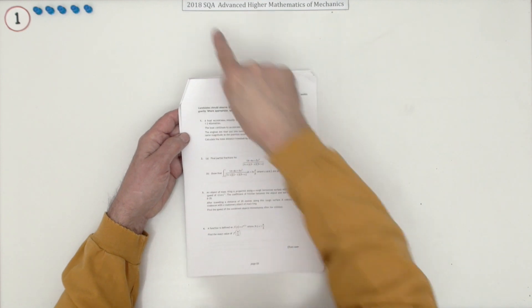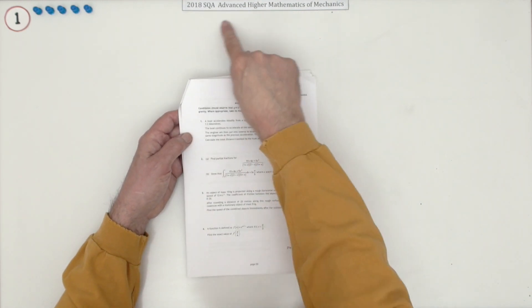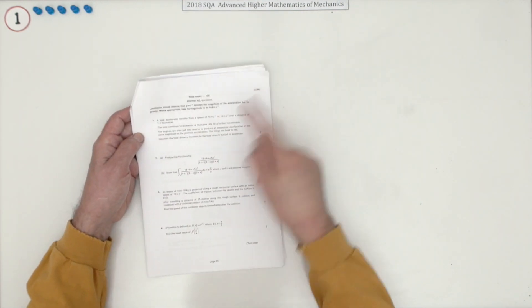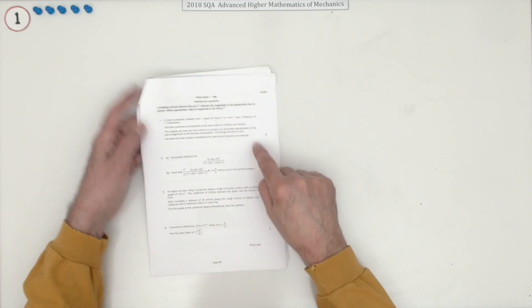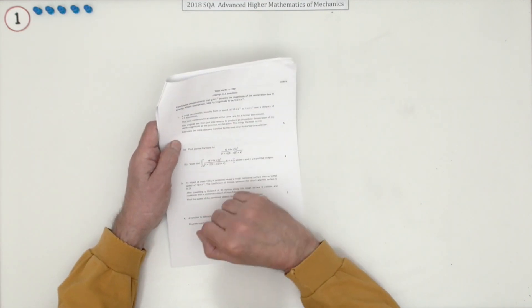So question one then, the first question in the 2018 SQA Advanced Higher Mathematics of Mechanics, a time distance speed question for five marks on constant acceleration.